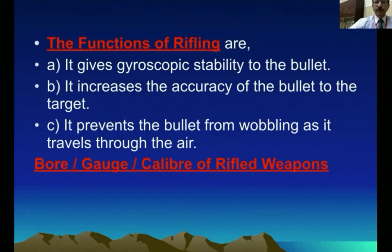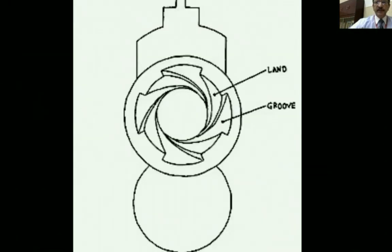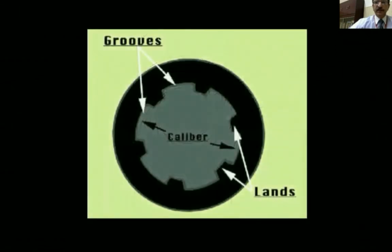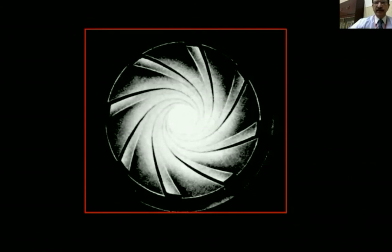The bore, gauge, or caliber of a rifled weapon is the distance between two opposite lands. It is expressed in one-hundredths of an inch or in millimeters. From the muzzle end, you can see the spiral lines which have been twisted — the raised portions are the lands and the lower ones are the grooves. These parallel lines run parallel but are spirally twisted from the breech end to the muzzle end.